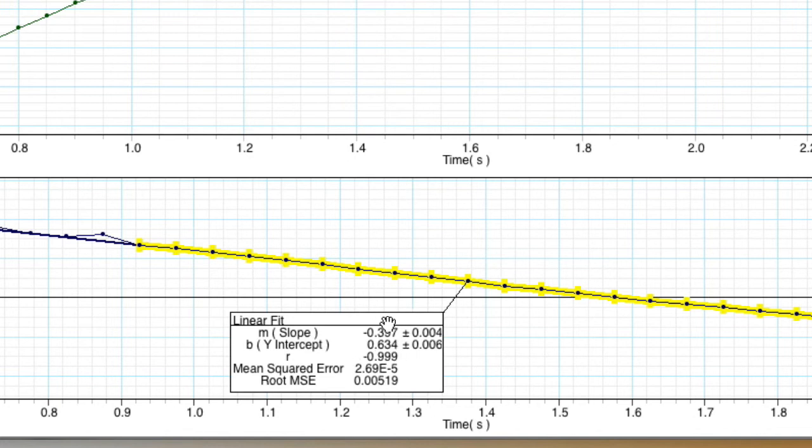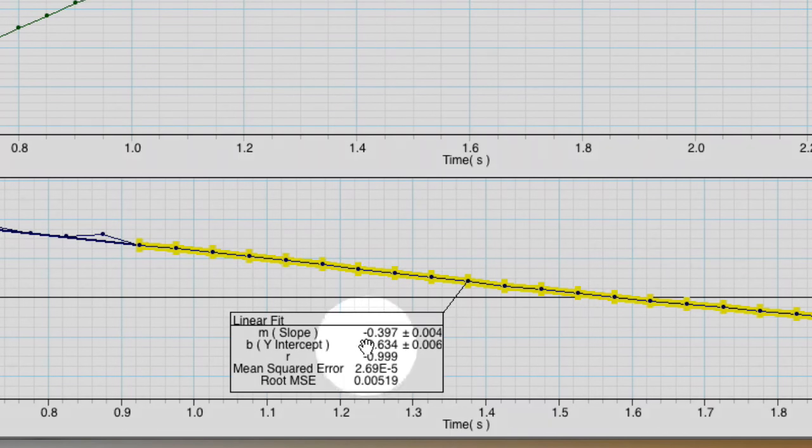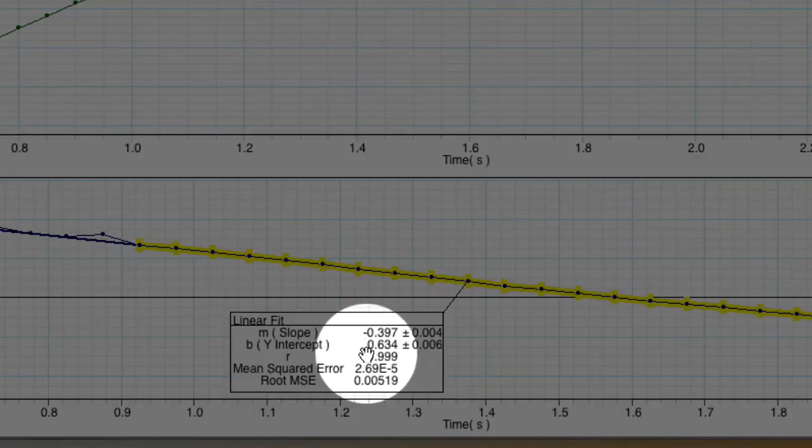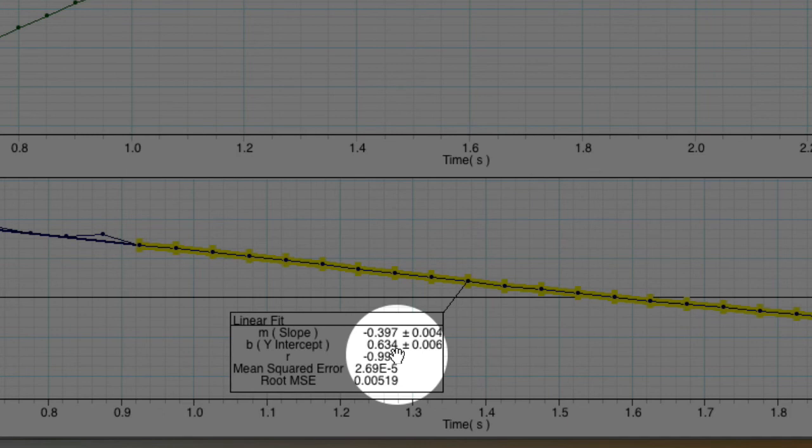And you can see in this calculation we've got, there's our negative number, negative because it's negative acceleration. This is negative 0.397 meters per second squared.